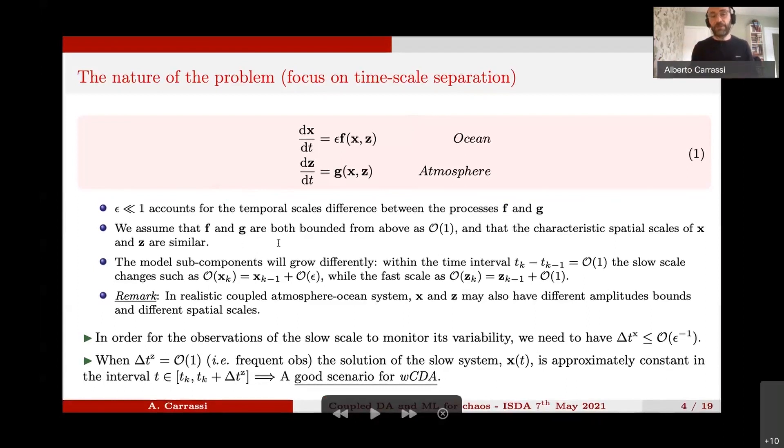In this setting, I'm assuming that the systems are autonomous, so there is not an external time dependent forcing. And the variable, the quantity epsilon here, accounts for the temporal scale difference between the two processes. So, this is a very simplified view in which I'm only focused on the time scale separation. We all know very well that in the realistic cases, atmosphere and ocean also differ for the spatial scale. So at the same time, we're also assuming here that F and G, the tendency for the atmosphere and the ocean are all both bounded from above by the same quantity. So of course, given this setup, the two model subcomponents will grow differently.